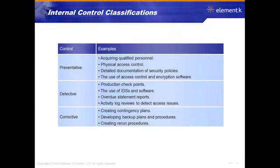A security policy can be as simple as a one-page document with a couple of sentences, or it can be a hundred pages with sub-policies covering everything from wireless access control to door locks. On the technical side, preventive controls can include encrypting software, using BitLocker on laptops, NTFS permissions, print permissions, share permissions, and rights management systems — all to prevent people from getting where they should not be in the first place.